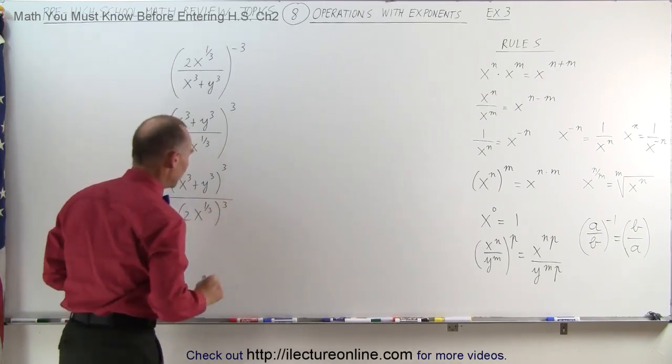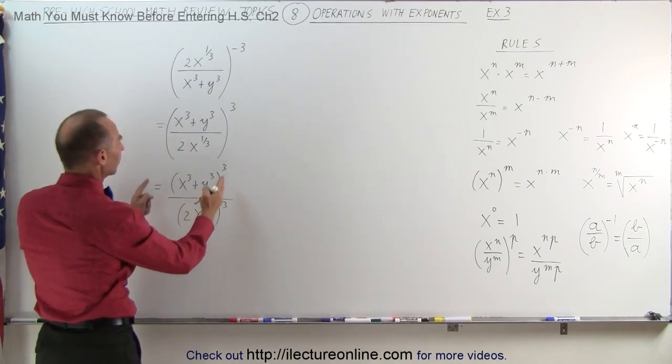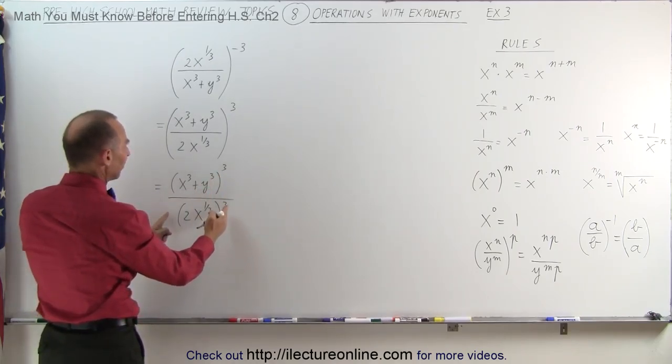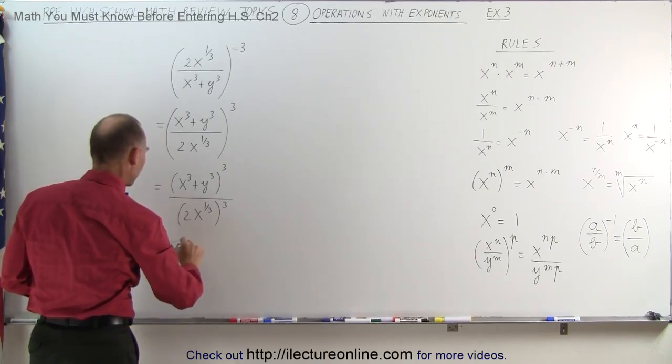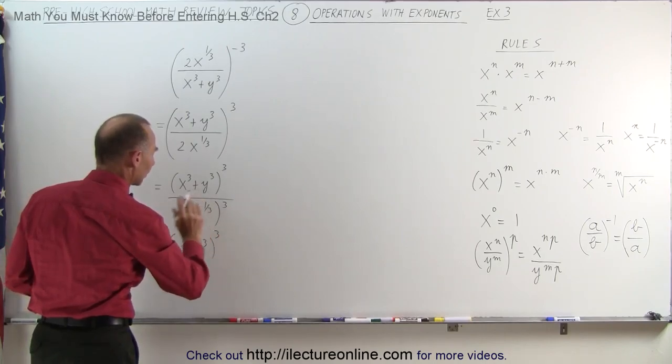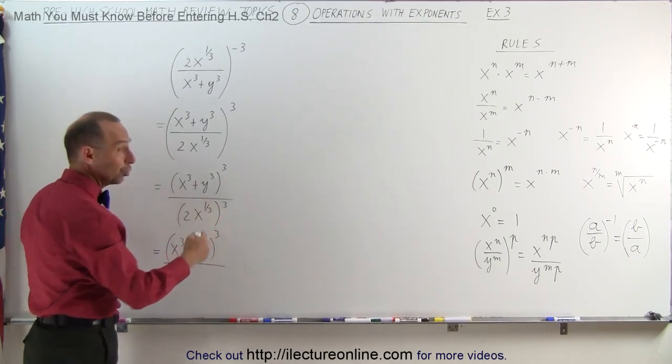This can now be written as quantity x cubed plus y cubed to the 3rd power divided by 2x to the 1/3 power raised to the 3rd power. Why do we do that? Because that way we can concentrate on simplifying this and simplifying this.